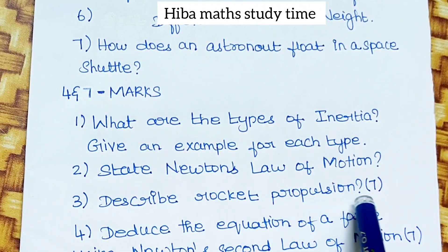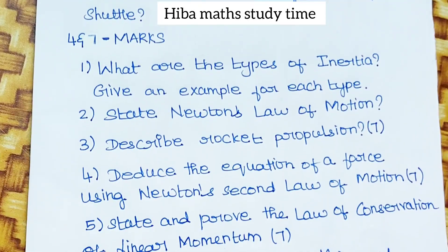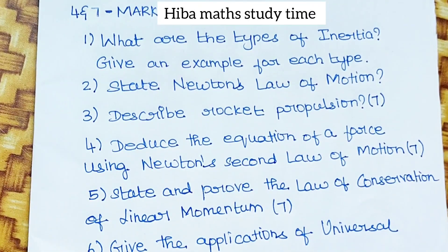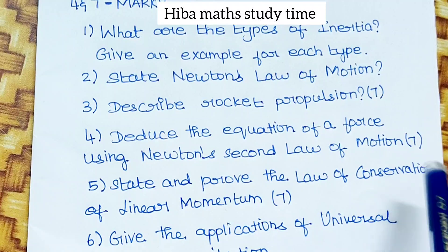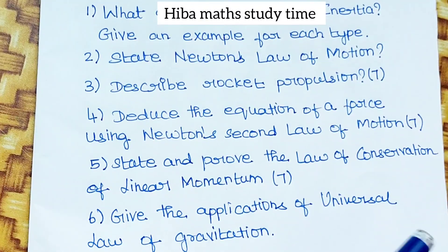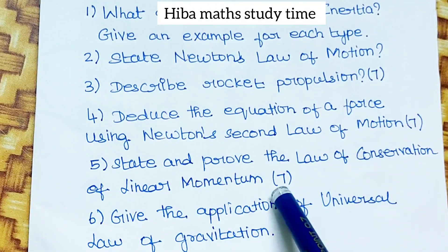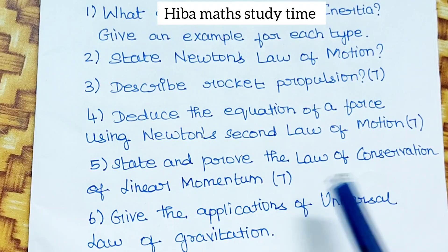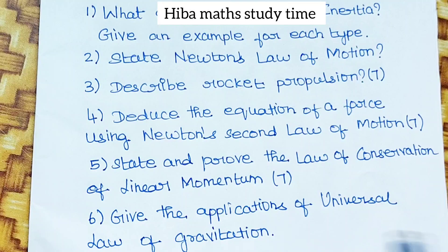Describe rocket propulsion — this is a 7-mark question. Derive the equation of force using Newton's second law of motion — 7 marks. State and prove the law of conservation of linear momentum — this is an important question, 7 marks. Give the applications of the universal law of gravitation — this is a 4-mark question.